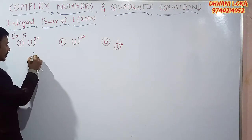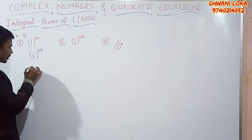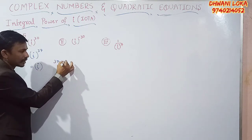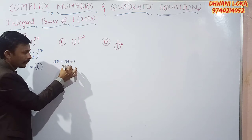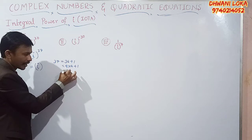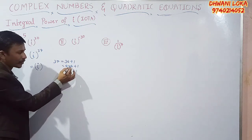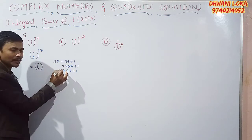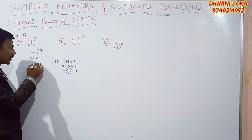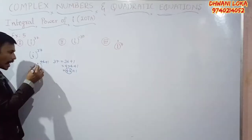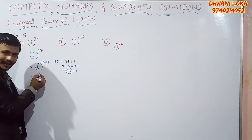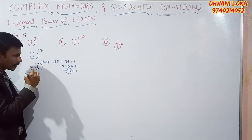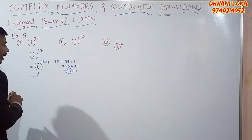Example: i to the power 37. We need to find multiples of 4 near 37. We can write 37 as 36 plus 1, which is 4 times 9 plus 1 — that is of the form 4k plus 1. Since i to the power 4k plus 1 equals i, therefore i to the power 37 equals i.